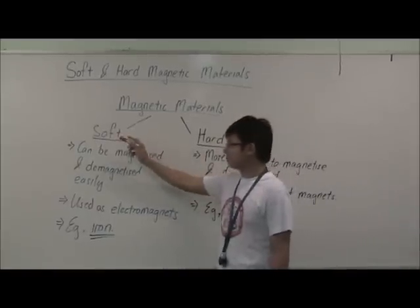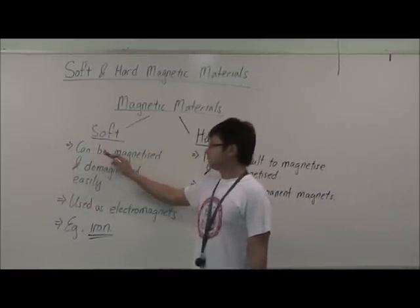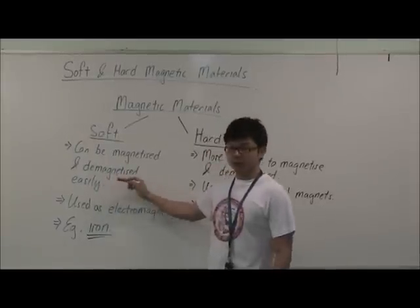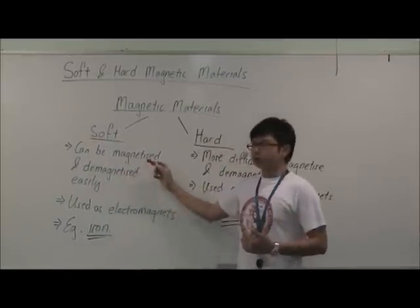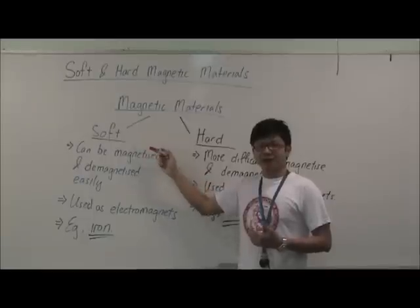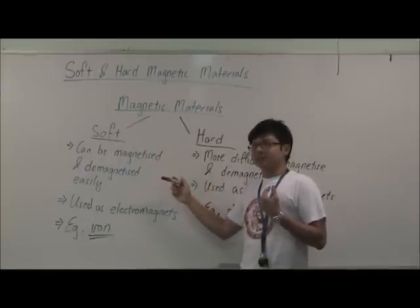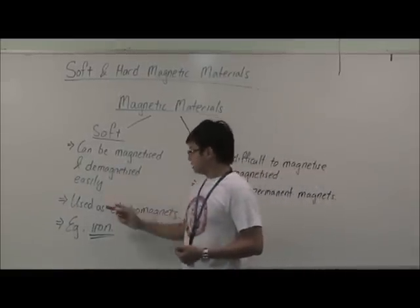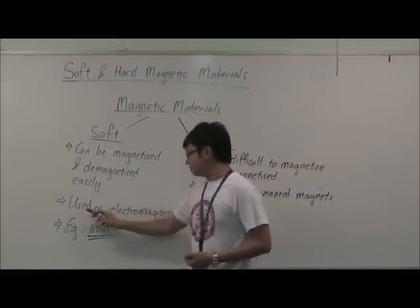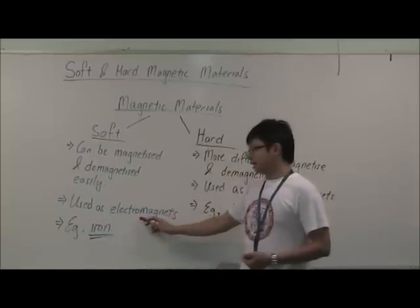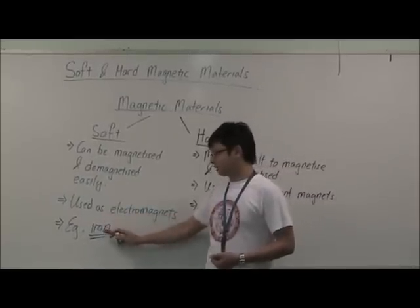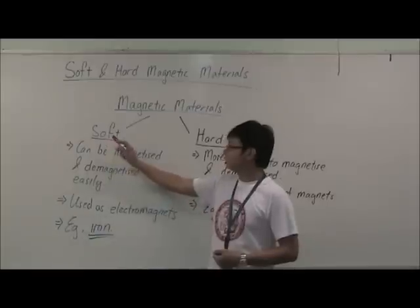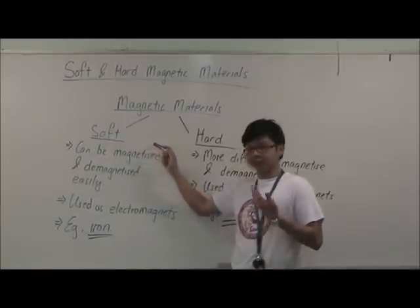Now let's look at soft magnetic materials. They can be magnetized and demagnetized easily. In short, it's very easy to magnetize soft magnetic materials, but at the same time, it loses its magnetism very fast. Soft magnetic materials can be used as an electromagnet. An example of this will be iron — iron is a soft magnetic material.